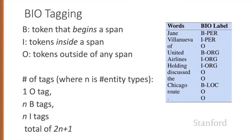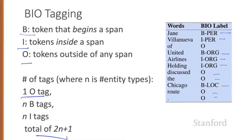How does BIO tagging work? We label any token that begins a span of interest with the label B, tokens that occur inside a span with an I, and tokens outside of any span are labeled O. While there's only one O tag, we have distinct B and I tags for each named entity class. The number of tags is thus 2N plus 1, where N is the number of entity types. So we have a begin-person, a begin-organization, a begin-location, an inside-person, an inside-organization, and just one O tag for everything else.